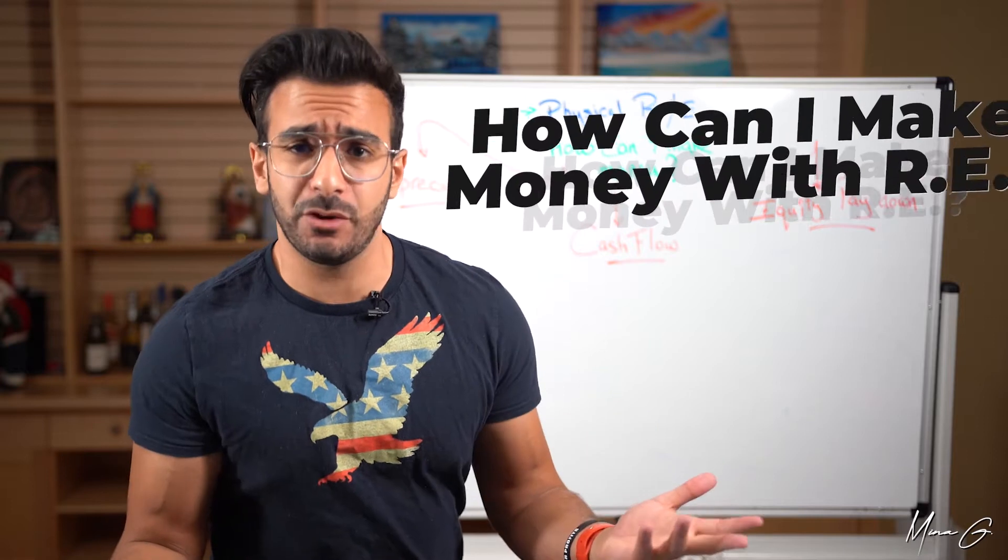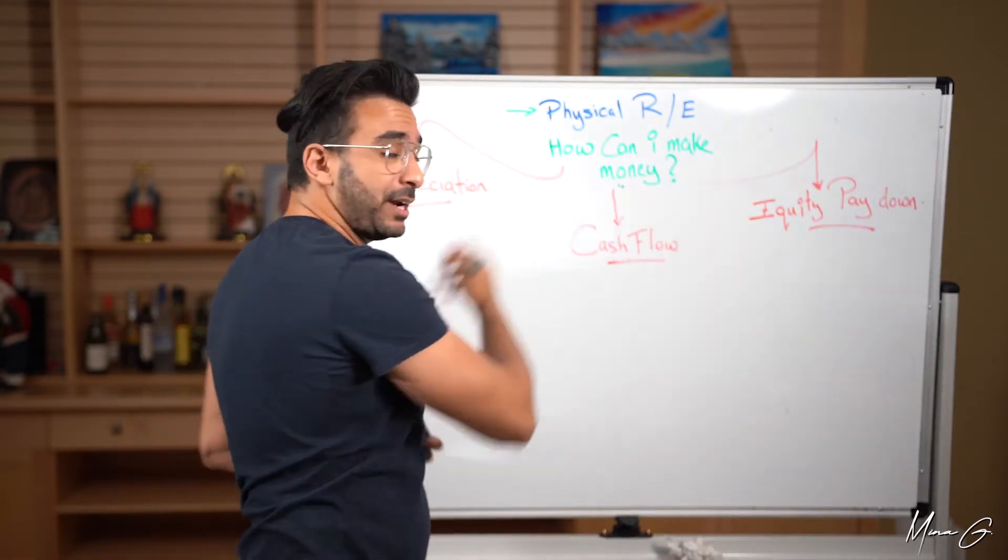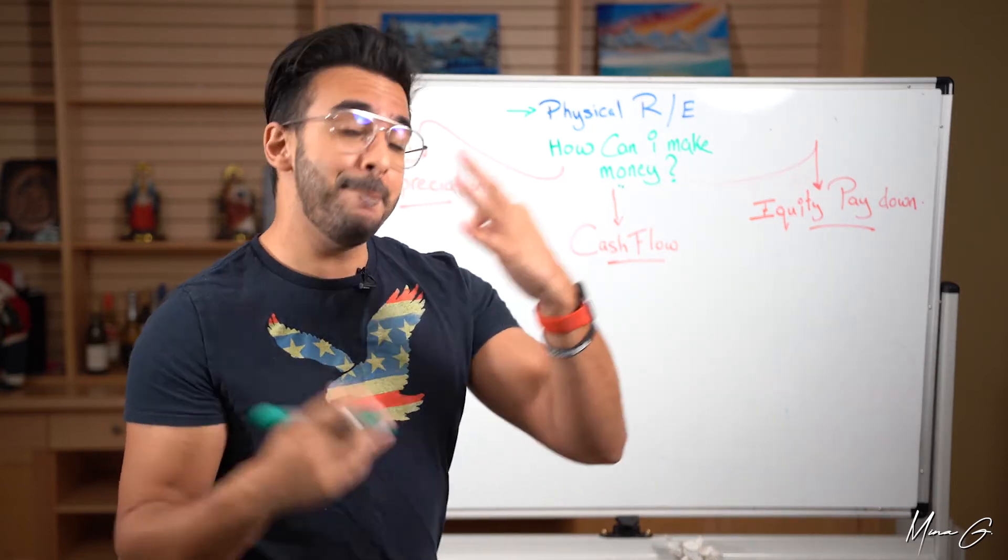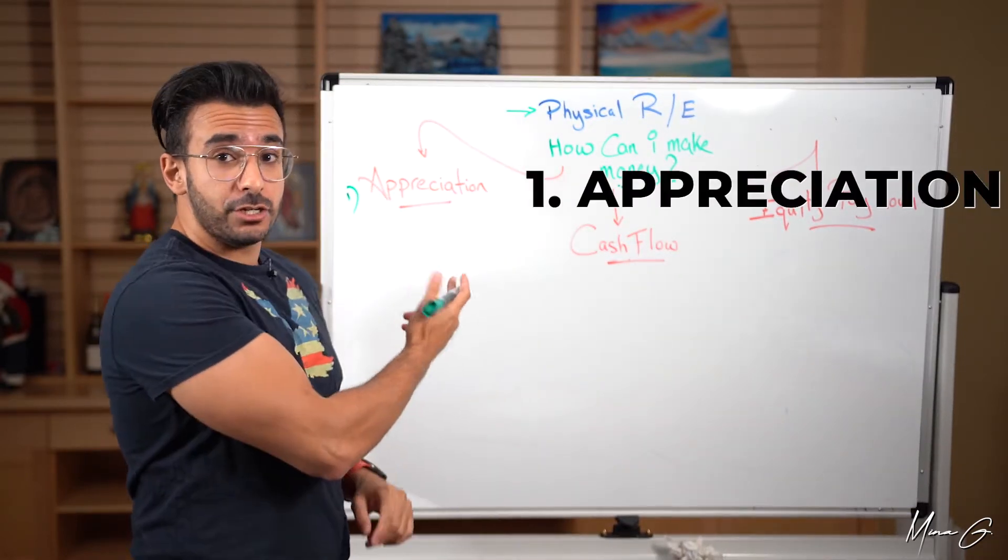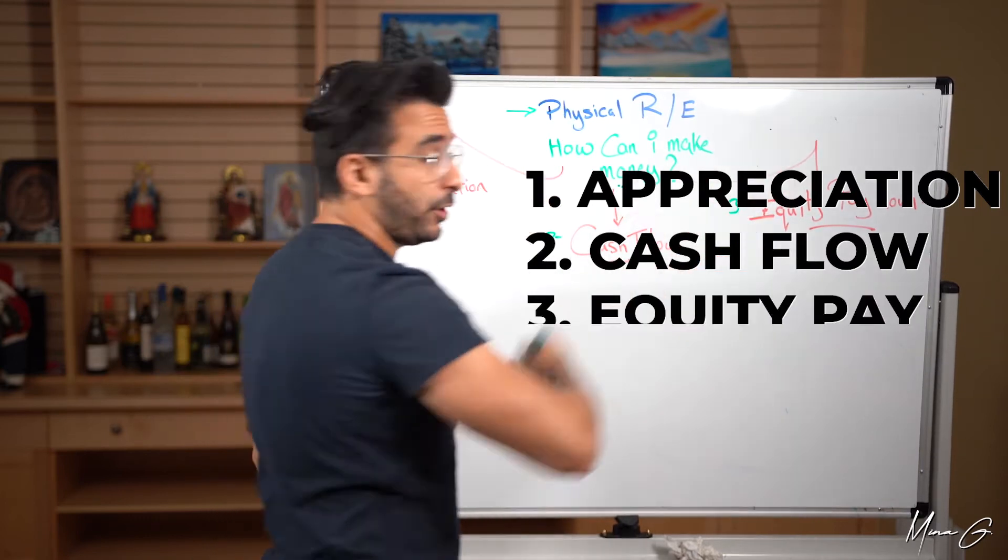So now how can I make money with real estate? Great. You said what it is. Nobody gives a shit. So how can I make money? Which is the most important question. So with physical real estate, it's very interesting. There's three main ways that you could make money. Number one is called appreciation. Number two is called cashflow. Number three is called equity pay down.